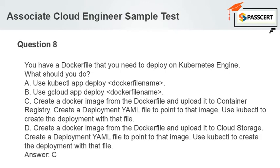Question 8: You have a Dockerfile that you need to deploy on Kubernetes Engine. What should you do? A. Use kubectl app deploy. B. Use gcloud app deploy. C. Create a Docker image from the Dockerfile and upload it to Container Registry. Create a deployment YAML file to point to that image. Use kubectl to create the deployment with that file. D. Create a Docker image from the Dockerfile and upload it to Cloud Storage. Create a deployment YAML file to point to that image. Use kubectl to create the deployment with that file. Answer: C.